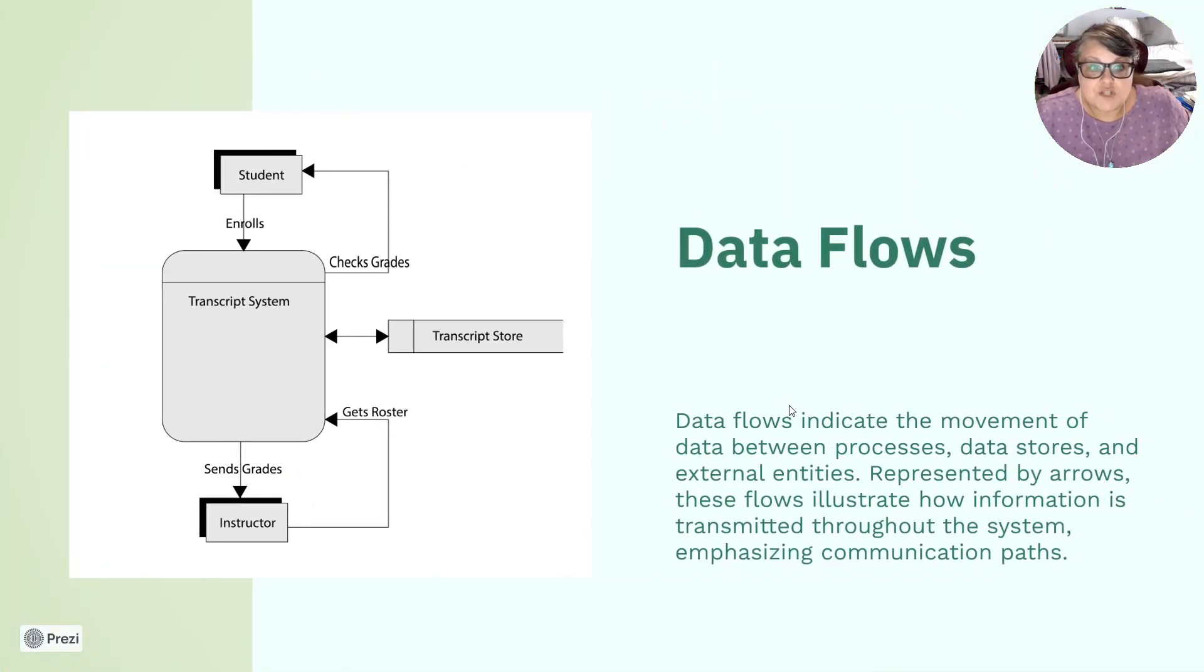Data flows are these arrows where you show the data flow. Data flows indicate the movement of data between processes, data stores and external entities represented by arrows. These flows illustrate how information is transmitted throughout the system emphasizing communication paths. So these arrows are the data flows, making it a data flow diagram. You show it between what makes the system, what makes the store, what makes the entity and where the information goes.